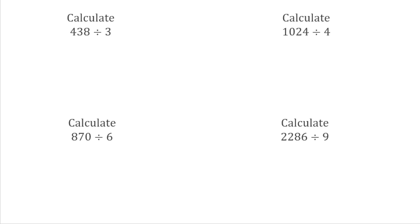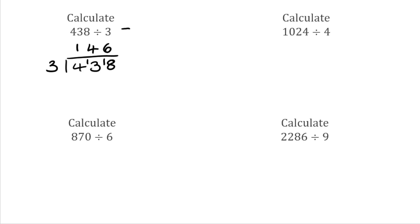For this first question I have 438 divided by 3. We go along — how many 3s fit into 4? That would be 1, leaving us with the remainder of 1. We then see how many 3s fit into 13 — that would be 4, because 3 times 4 is 12, with the remainder of 1 again. And then finally, how many 3s fit into 18? That would be 6, because 3 times 6 is 18. So our final answer is 146.